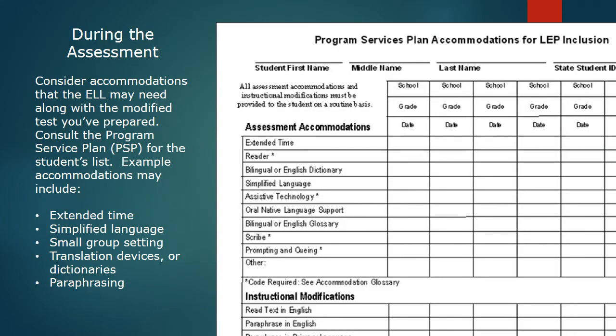Now that you've modified your assessment using the Amplified Standards and based on the student's English language proficiency scores, you're ready to give your assessment. Make sure your student doesn't qualify for any additional accommodations — you can find these in the Program Service Plan. They might include things like extended time, simplified language, or a bilingual or English glossary.